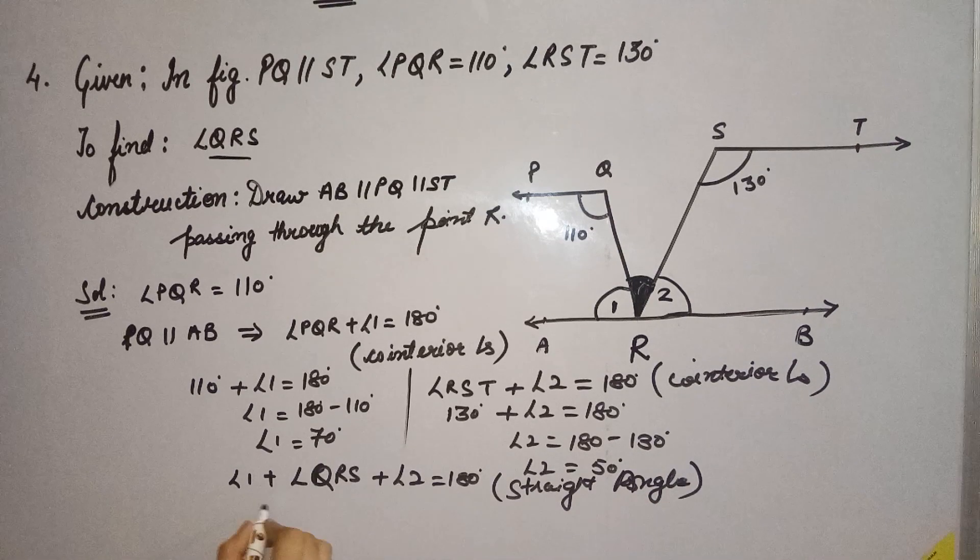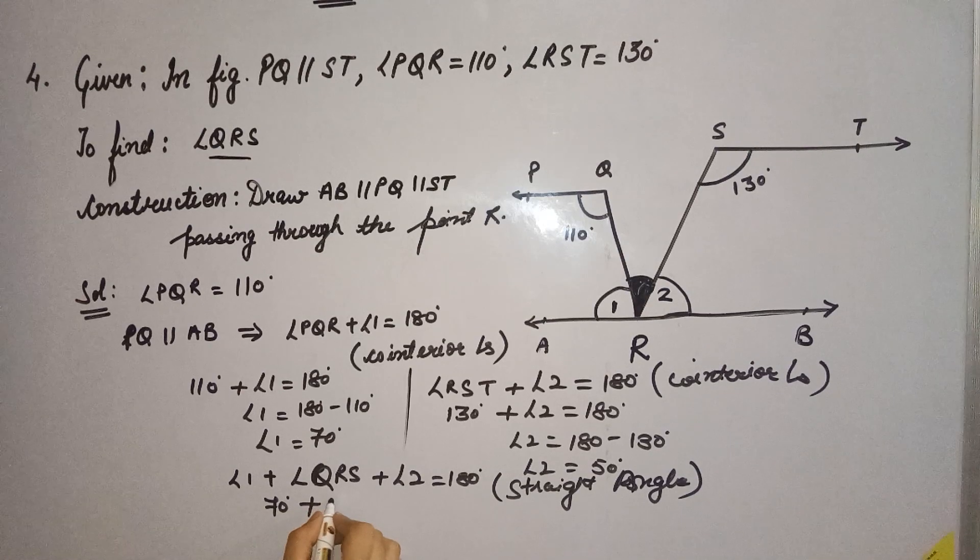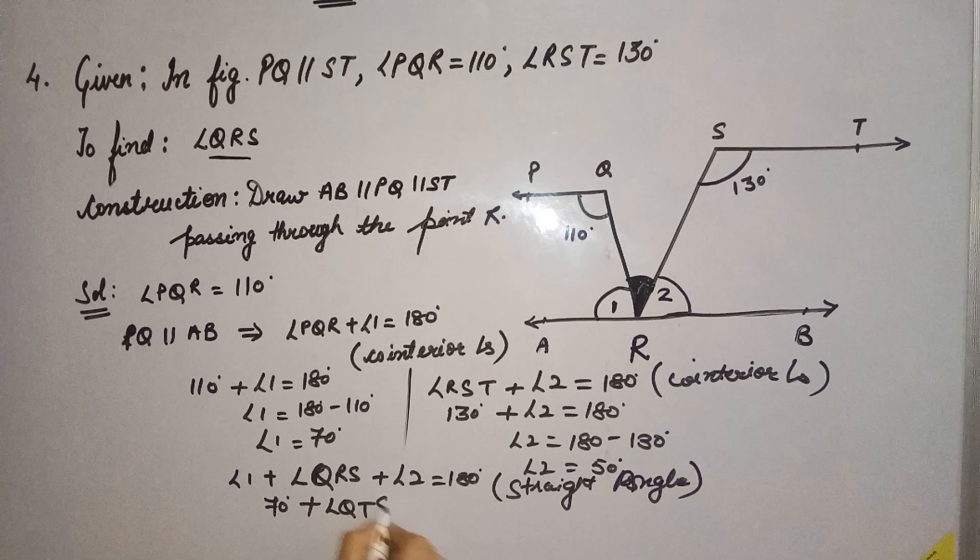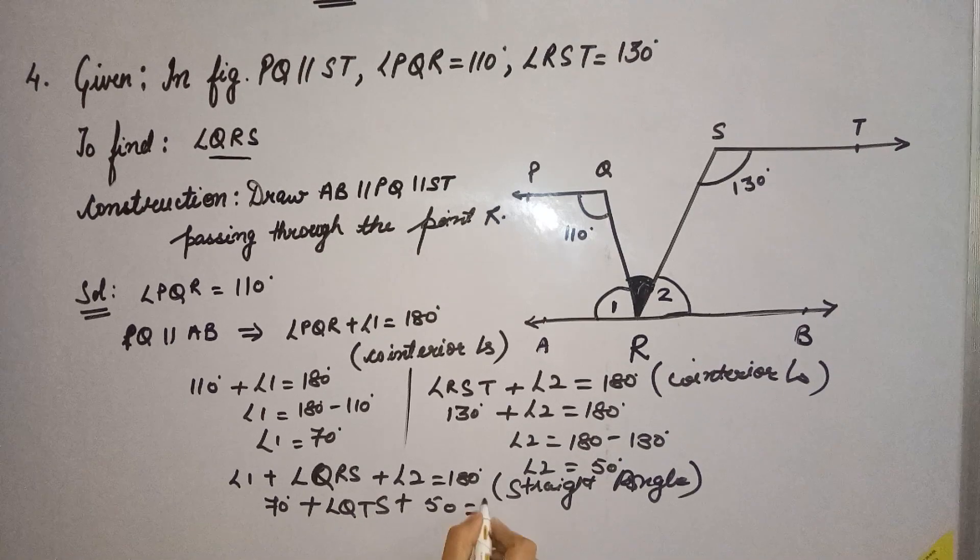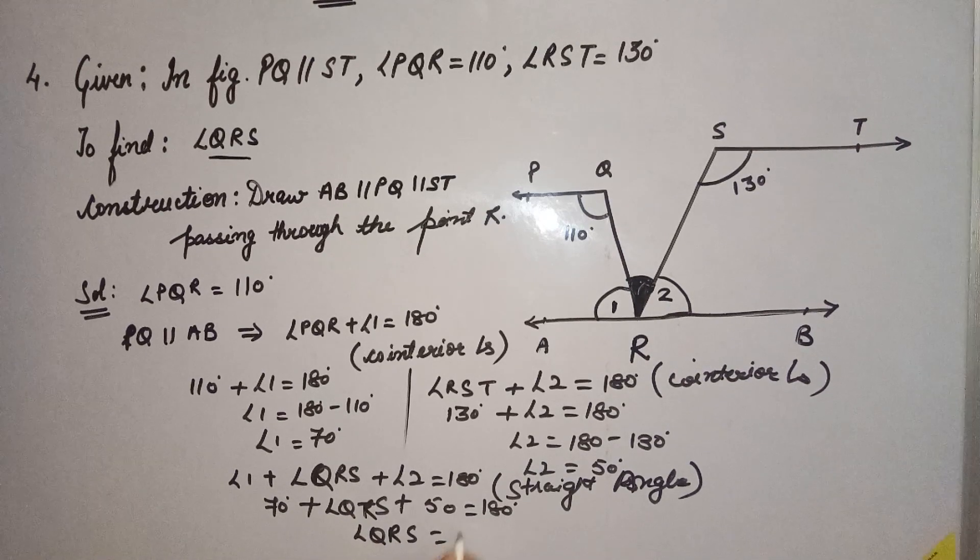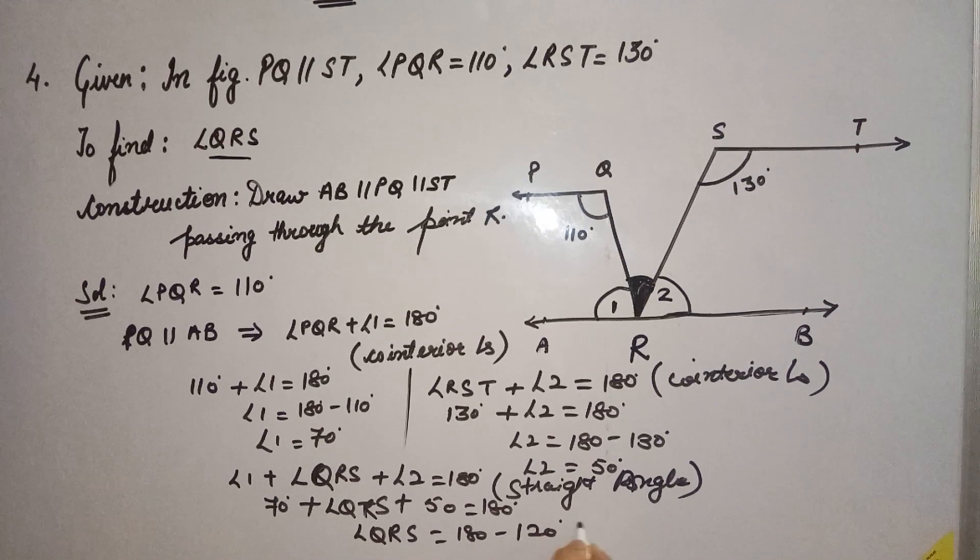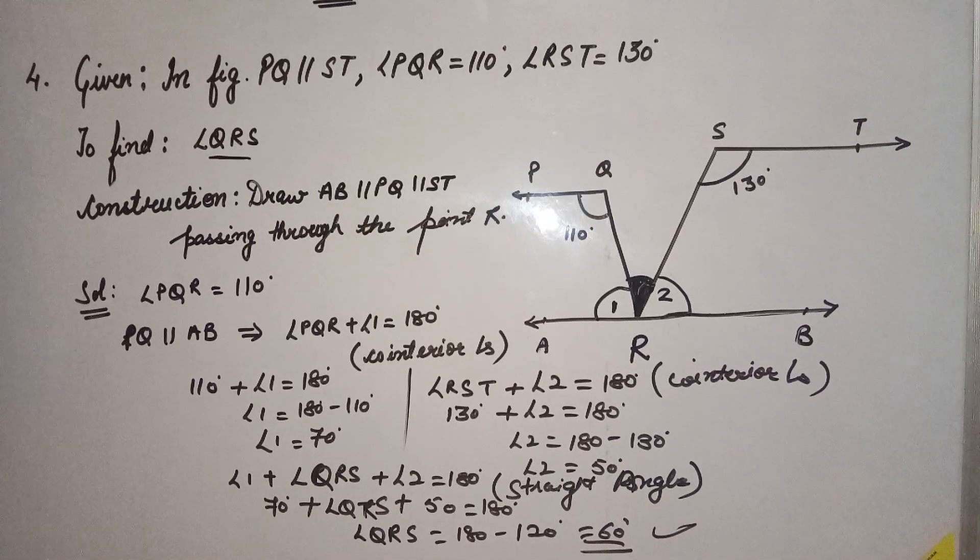So from here we get QRS equals 180 minus 70 minus 50, which gives us 60 degrees. Is it okay?